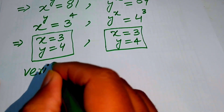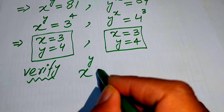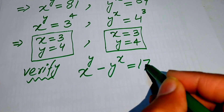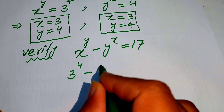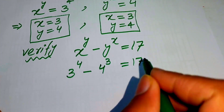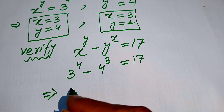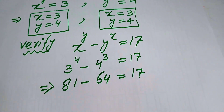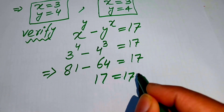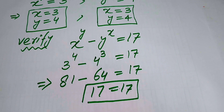Now we verify the values of x and y. Our given equation is x to the power of y minus y to the power of x equals 17. Substituting x equals 3 and y equals 4, we get 3 to the power of 4 minus 4 to the power of 3. Since 3 to the power of 4 equals 81 and 4 to the power of 3 equals 64, we get 81 minus 64 equals 17, which confirms our answer. Thank you for watching — please subscribe to my channel for more exciting videos.